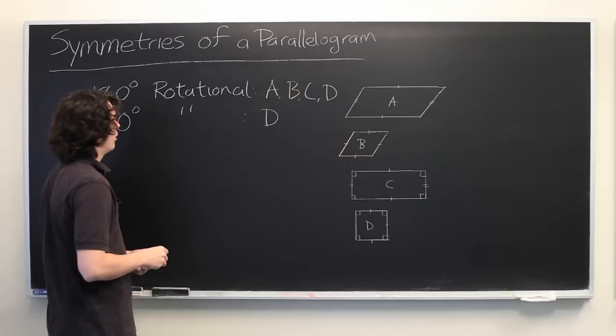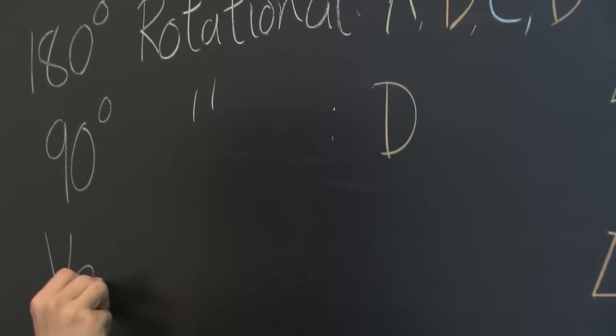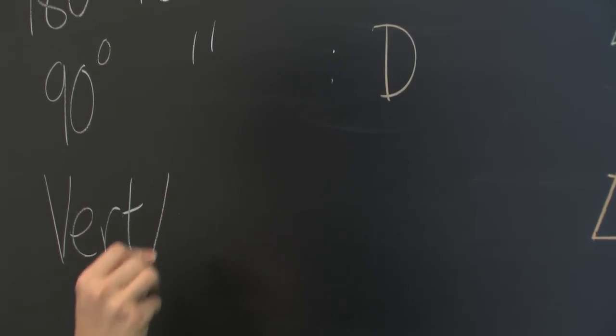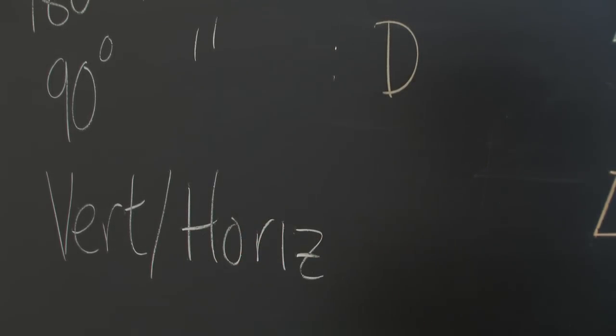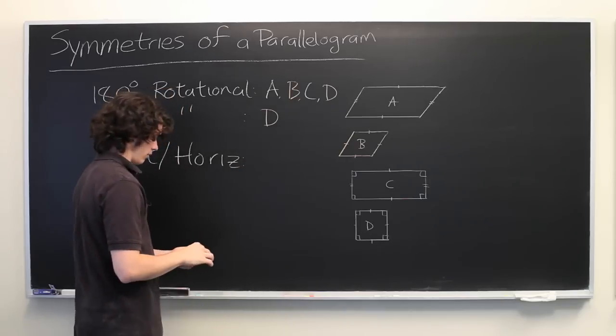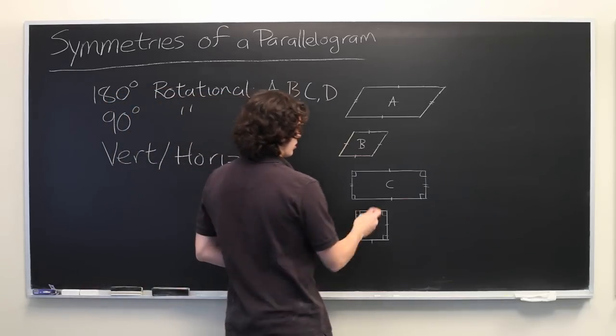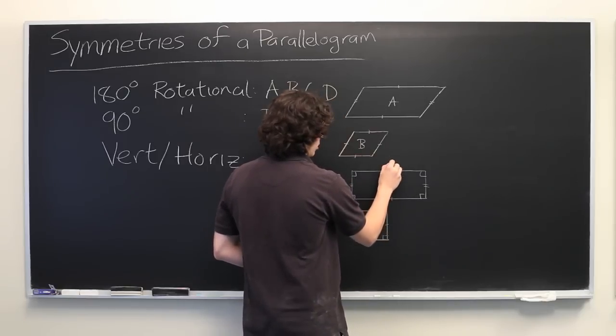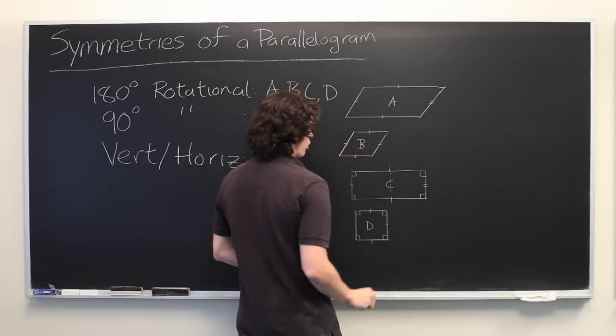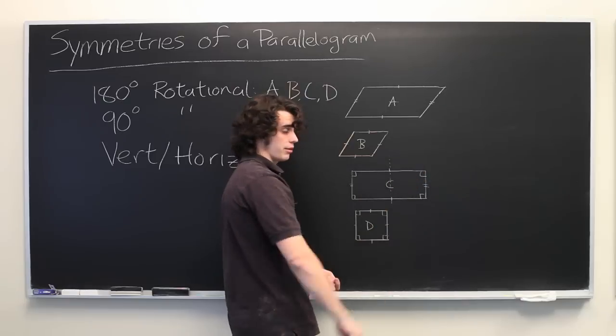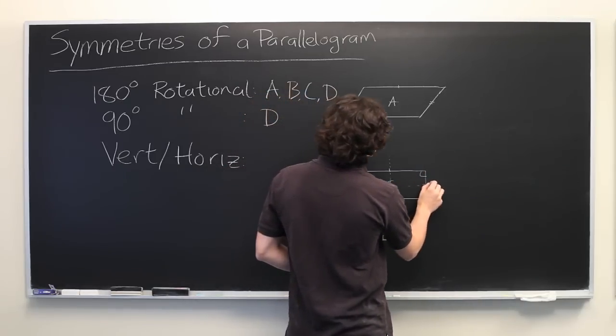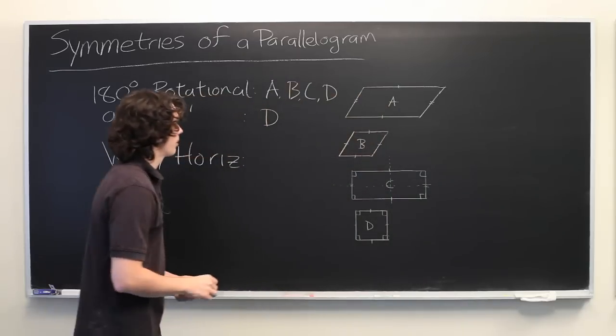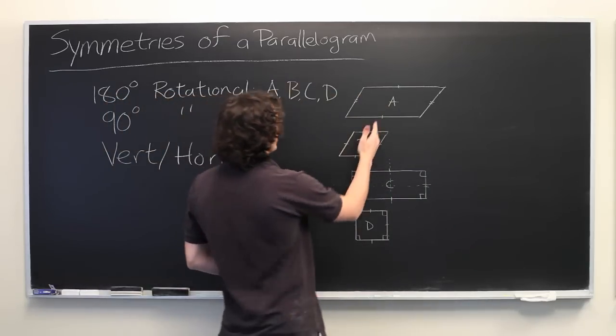Alrighty. What about lines of symmetry? Vertical and horizontal. Well, for example, if we take class C here, we can draw a line right down the middle to get an axis of symmetry. And we can also do the same with the horizontal line.